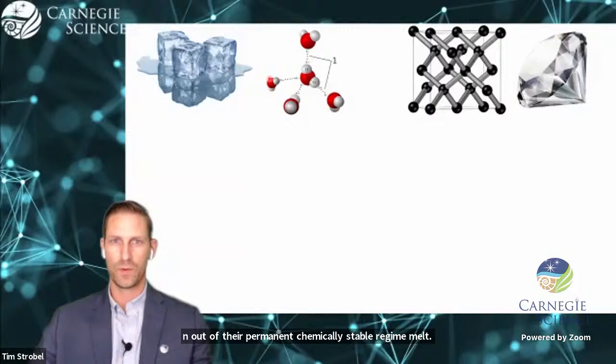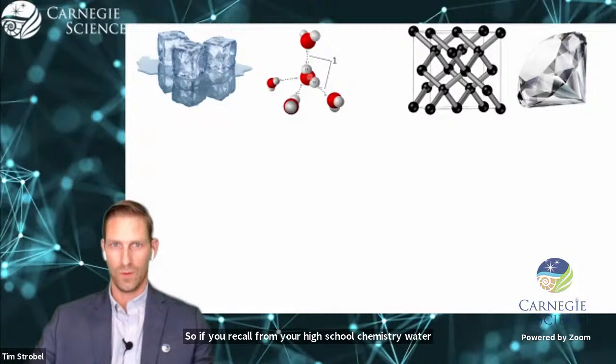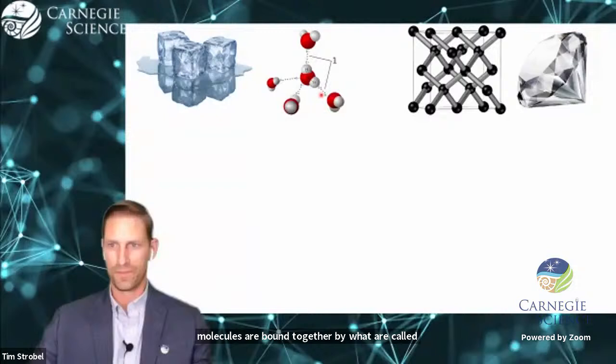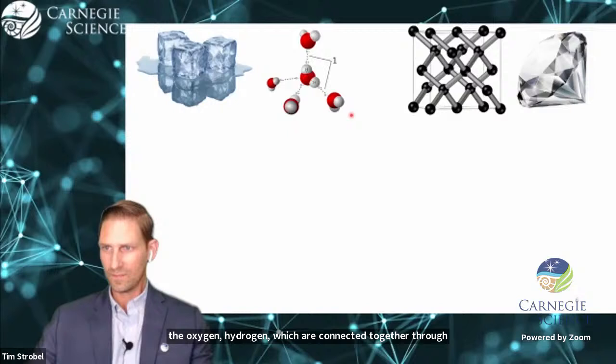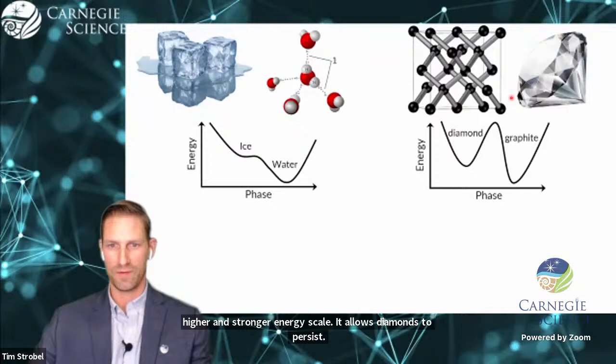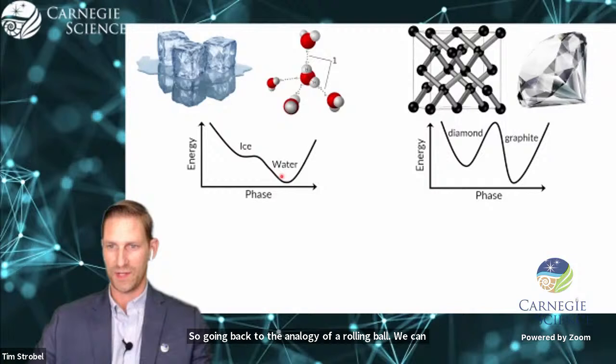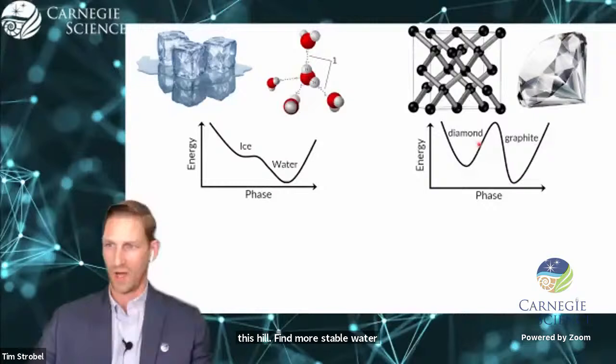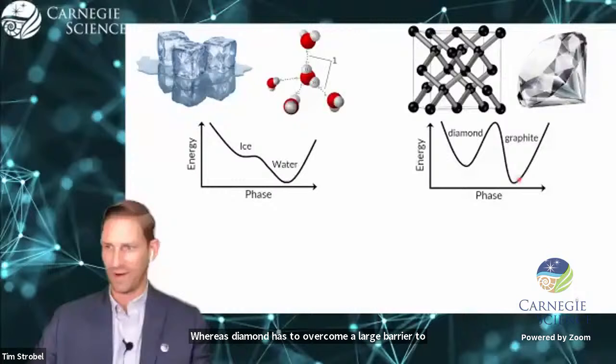And it has to do with chemical bonding. If you recall from your high school chemistry, water molecules are bound together by hydrogen bonds. Whereas diamond is comprised of covalent bonds, much higher and stronger energy scale that allows diamonds to persist. At room temperature, ice can easily roll down this hill to find more stable water.